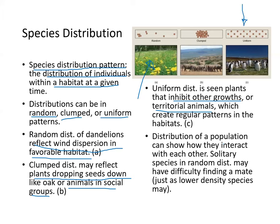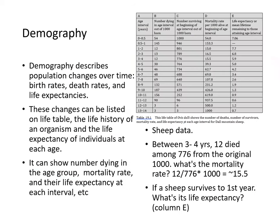Distribution patterns show how populations interact with each other. Solitary species are usually in random distribution and may have difficulty finding mates, as can lower-density species. Demography refers to population change over time and involves studying birth rates, death rates, and life expectancy.